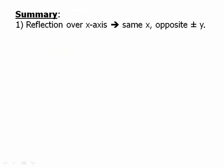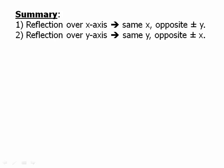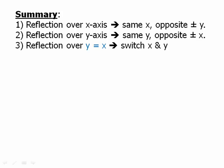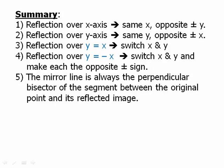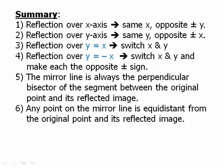In summary: reflecting over the x-axis keeps the same x-coordinate and gives opposite-signed y-coordinates. Reflecting over the y-axis keeps the same y-coordinate and gives opposite-signed x-coordinates. Reflecting over y = x switches the x and y-coordinates. Reflecting over y = −x switches the x and y-coordinates and makes each the opposite sign. In all cases, the mirror line is the perpendicular bisector of the segment between the original point and its reflected image, and any point on the mirror line is equidistant from the original point and its reflection.